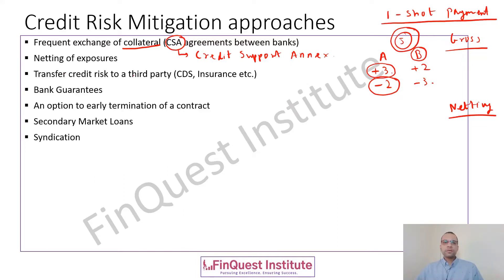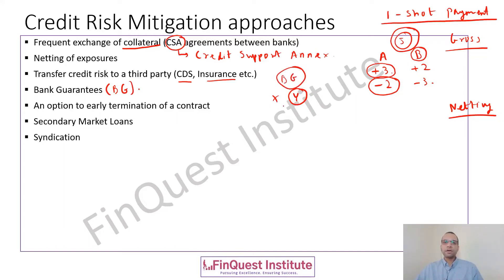The third way is to transfer the risk to a certain third party. We can have a CDS or insurance contract entered into. Next, we have bank guarantees, or BGs. BGs are another way of credit risk mitigation. Imagine two parties X and Y enter into a transaction — Y holds a bank guarantee and says to X: in case I do not make good my side of the payments, my bank is going to make good on my behalf so that you don't suffer any credit losses. This is what you call a bank guarantee.